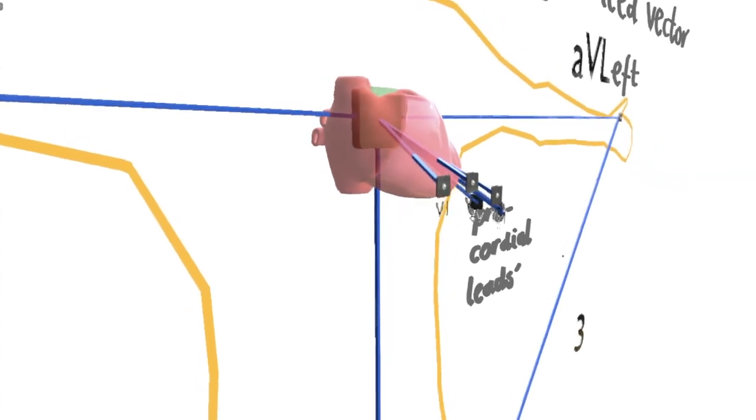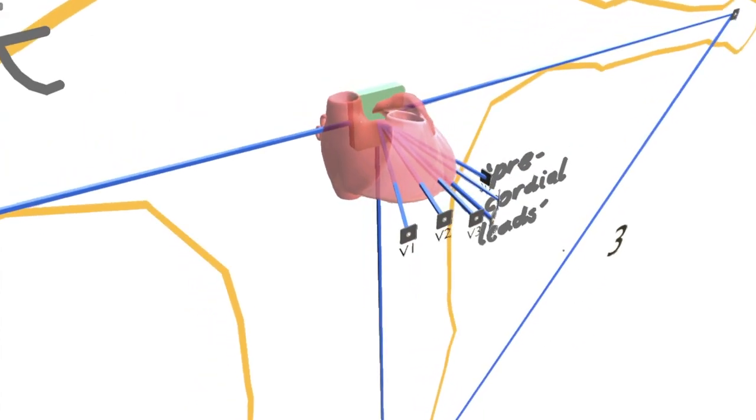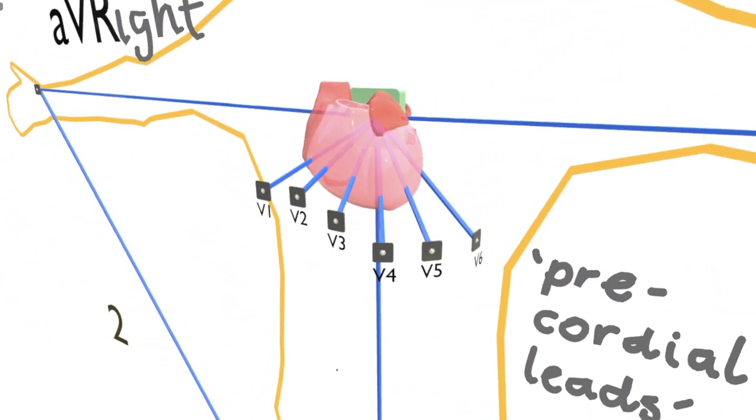And so now we have this beautiful picture of the current in the heart in a whole range of axes. And the beauty of this is that it allows us to localize problems in space. We can pinpoint where a problem is occurring in the heart based on which leads show us changes.